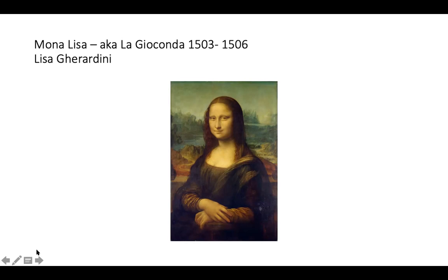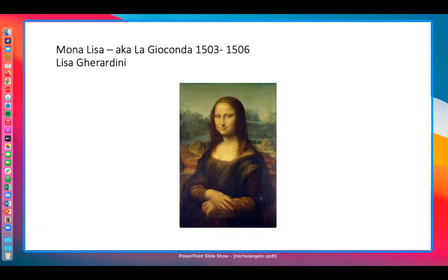In 2006, infrared camera work proved that the Mona Lisa was originally going to have her hands resting on her chair, but Leonardo changed the position. Recent restoration research also uncovered three things we no longer see: she had originally been painted with a pearl headdress, and she also had eyelashes and eyebrows.